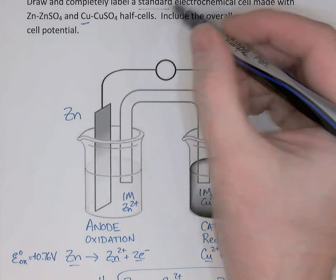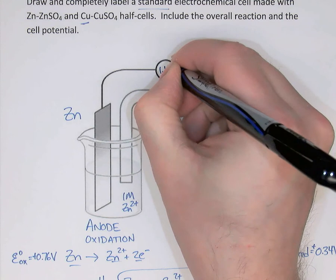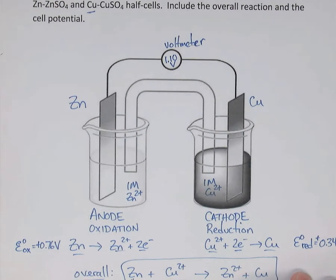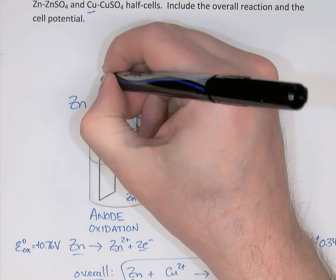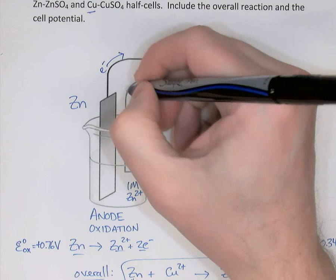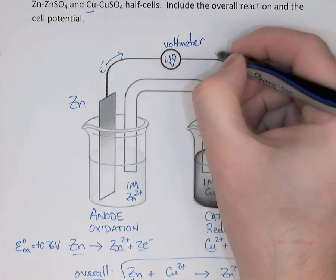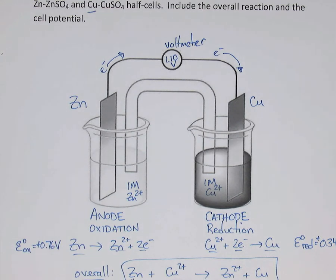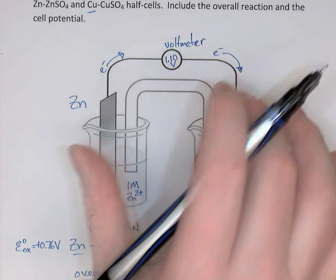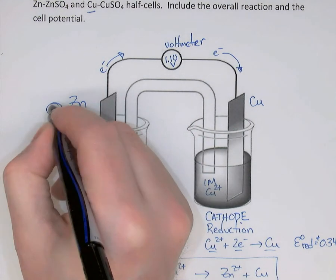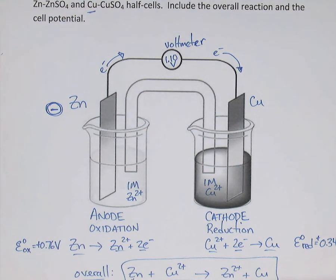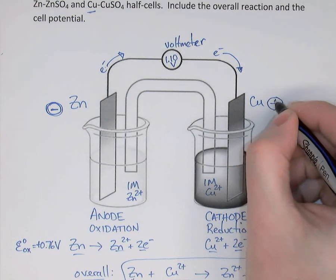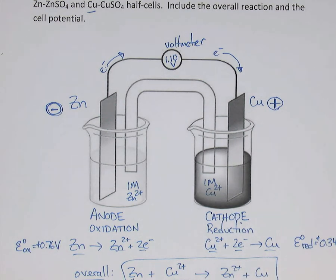Coming back to our cell, the cell potential was 1.10 volts, so I'll write that at the voltmeter. Oxidation is the loss of electrons, so the anode sends electrons out of the zinc strip — electrons come out of the anode and are gained over at the cathode. Electrons always travel from the anode to the cathode. The labels on the outside of the battery are based on electron flow direction: since electrons are coming out of the zinc terminal (the anode), that terminal is labeled negative. The copper terminal is labeled positive because it attracts the negative electrons.